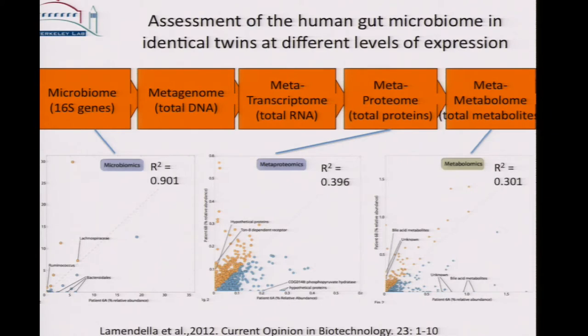Looking at the pipeline data from one pair of healthy identical twins and the correlations between the two individuals, at the microbiome level we have a very high correlation between OTUs present — R-squared of 0.9. If we look at the proteome, we start to get more separation and more individuality — R-squared of 0.396. And at the metabolome, even more individualized — R-squared of 0.301. So as you go through this pipeline, you start to get more and more individual characteristics; it becomes more discriminating.